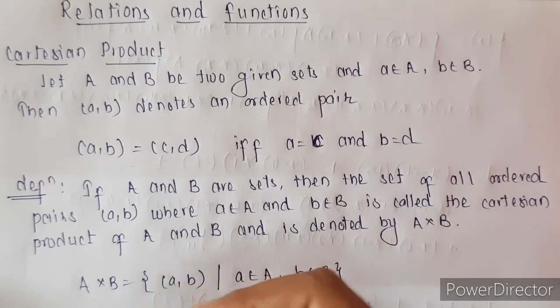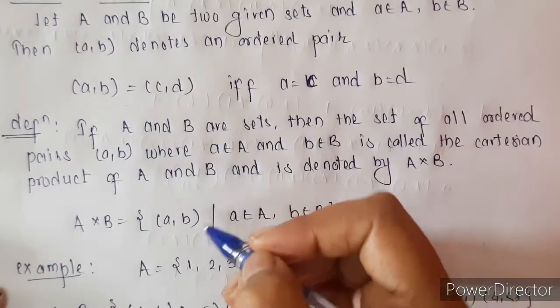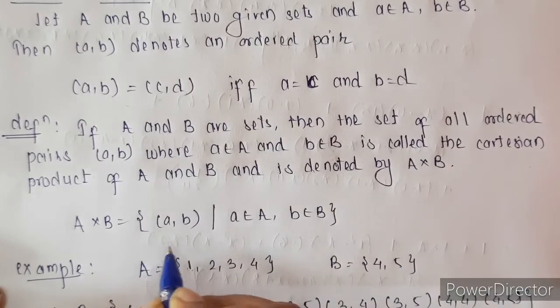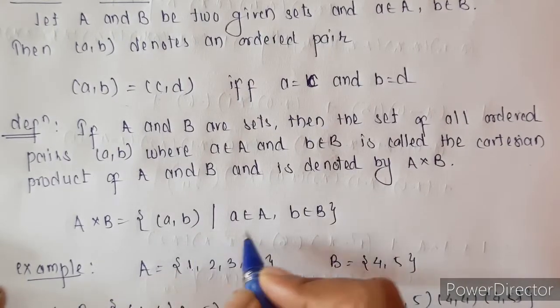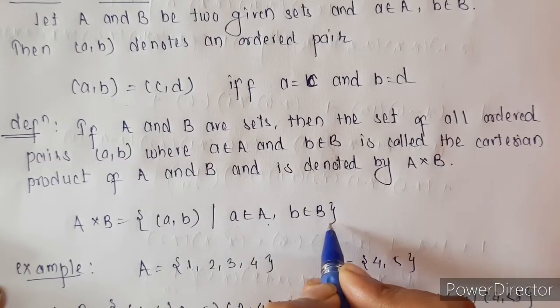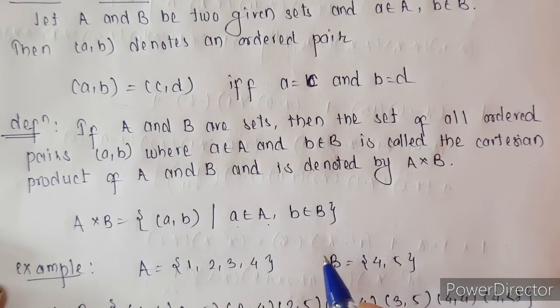So the set of all elements (a, b) such that a is in A and b is in B is nothing but the Cartesian product.